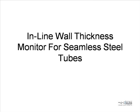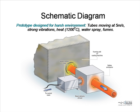The first application is an inline wall thickness monitor for seamless steel tubes. The requirement was to monitor the wall thickness of hot tubes as they exit a forming mill. A measurement head containing both lasers is placed alongside the tube as it exits the mill. Both laser beams are directed to the tube surface and a shroud surrounds the measurement position for the purpose of eye safety.